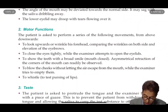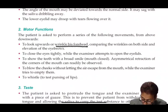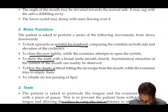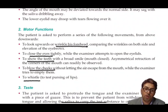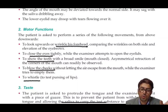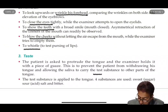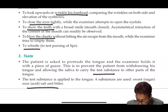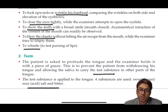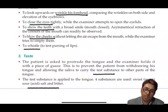To test the facial nerve clinically, we ask the patient to wrinkle the forehead, close the eyes, show the teeth, blow the cheek, and whistle. If a patient cannot perform these actions, we can diagnose facial muscle paralysis or Bell's palsy. We also ask the patient to taste substances on the anterior part of the tongue, which may be impaired in facial nerve lesions.